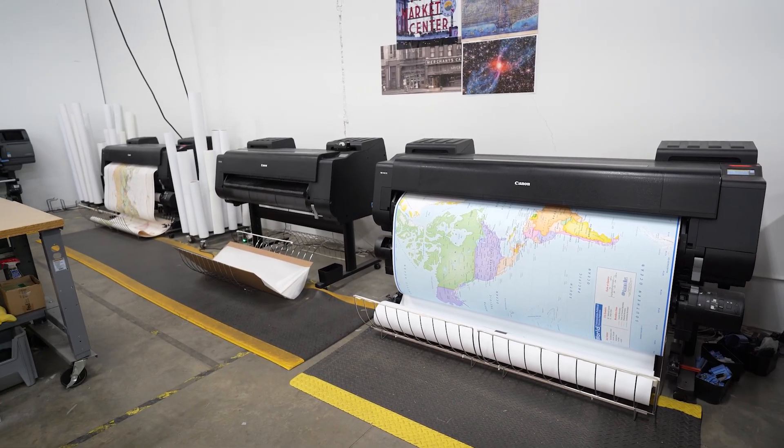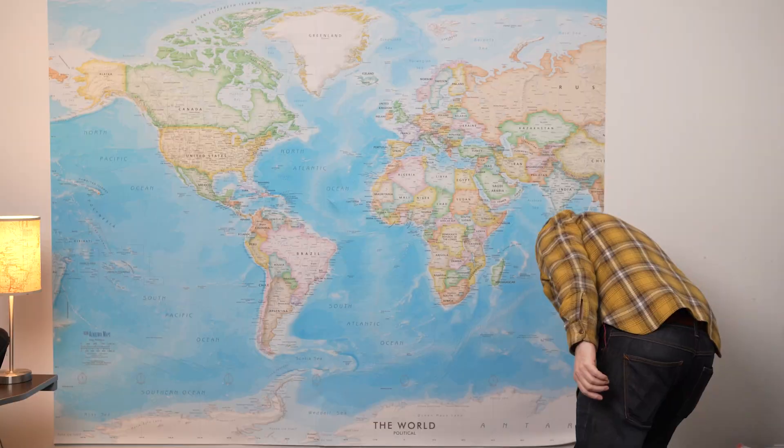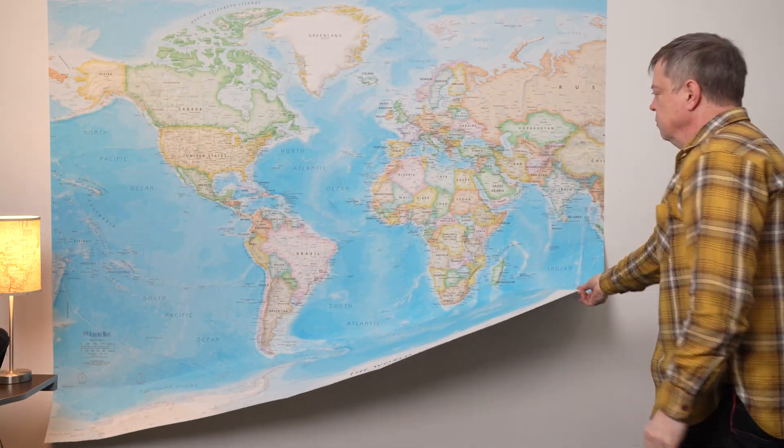Second reason, it just became normal. Once Mercator was the standard, it became what a world map looked like in people's minds. Straight edges, Greenland big, Antarctica stretched across the bottom. Everything else kind of looked weird or looked wrong.